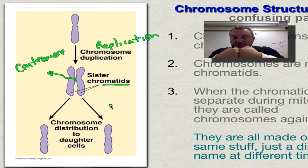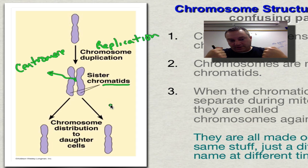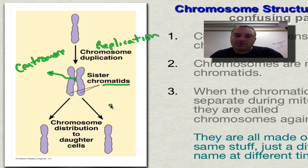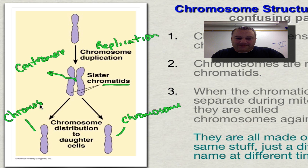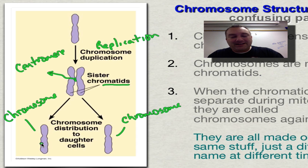During cell division, the centromere is going to rip apart — like ripping Velcro apart. The moment that centromere rips, you can no longer call them chromatids; they go back to being called chromosomes. They all look the same because they're exactly the same stuff — they just get a different name at different times.